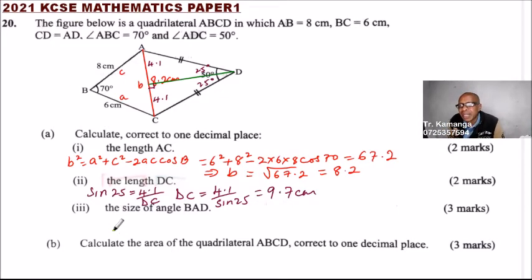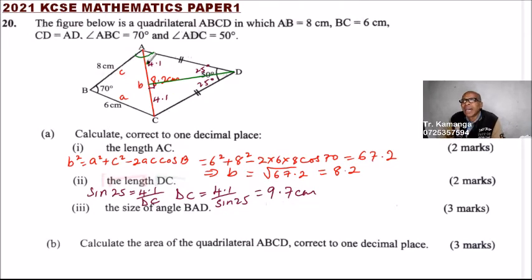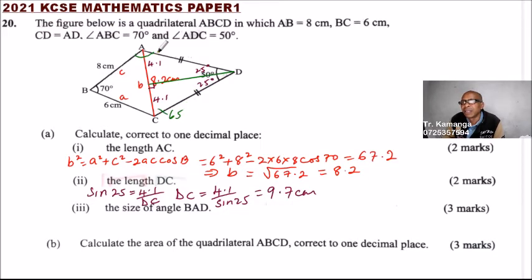Part three requires the size of angle BAD. Angle BAD is this angle here. We already know this angle is 25 degrees from each side, so the base angle of the isosceles triangle ADC is 65 degrees — this angle is 65 degrees.